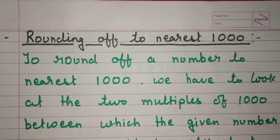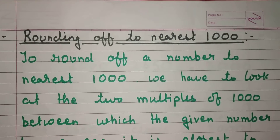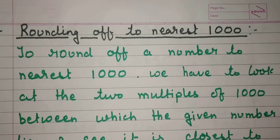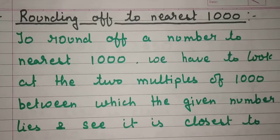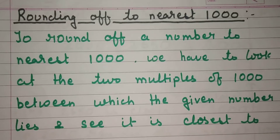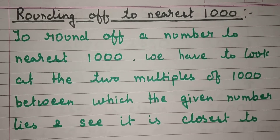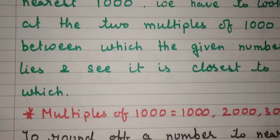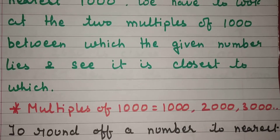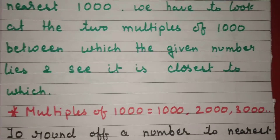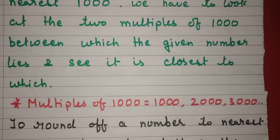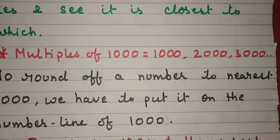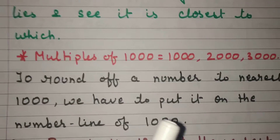To round off a number to the nearest thousand, we look at the two multiples of thousand between which the given number lies, and see which one it is closest to. The multiples of thousand are: one thousand, two thousand, three thousand, four thousand, and so on.